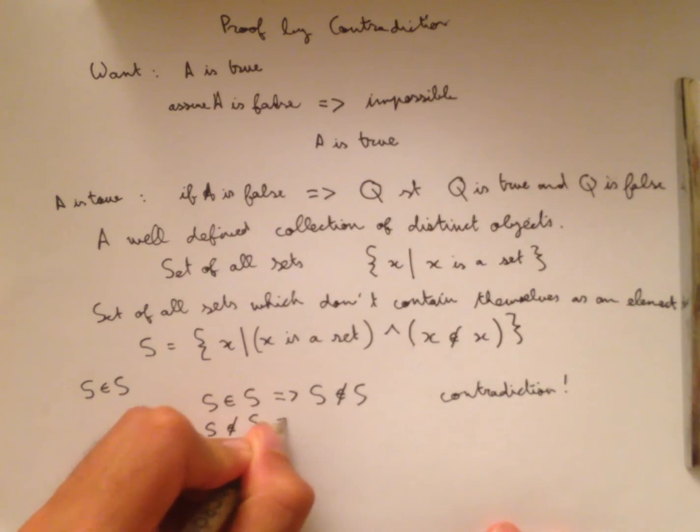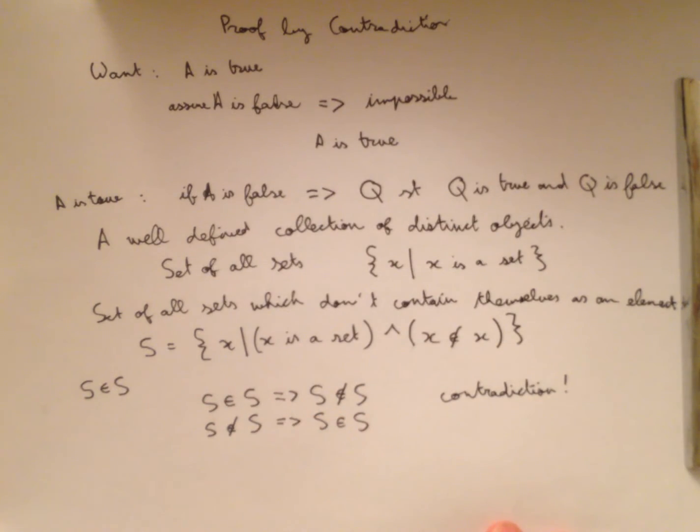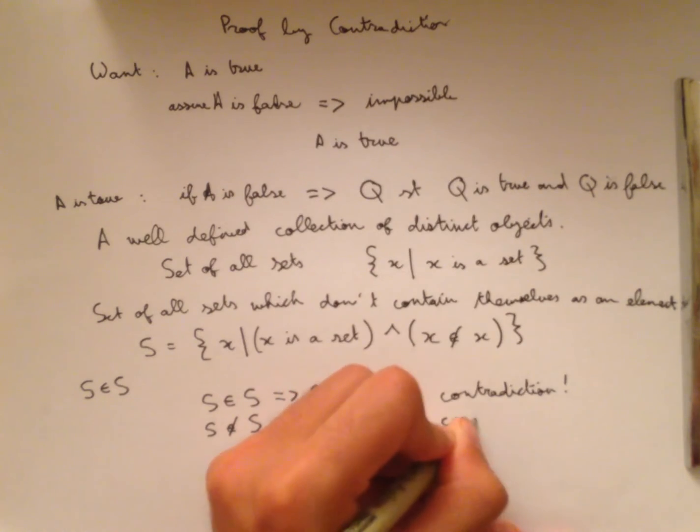So it is in our set S. So S is an element of S. Well, that's very strange, because we see that this is another contradiction, just like last time.